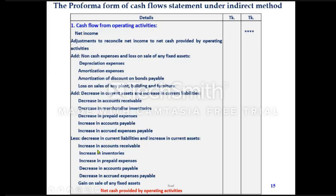For example: increase in accounts receivable, increase in inventories, increase in prepaid expenses, decrease in accounts payable, decrease in accrued expenses payable, and gain on sale of any fixed asset. These are the activities included in operating activities.